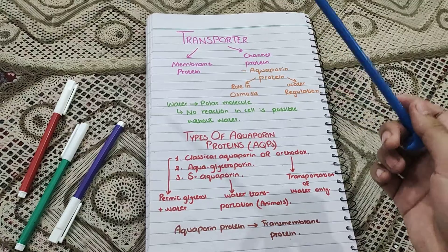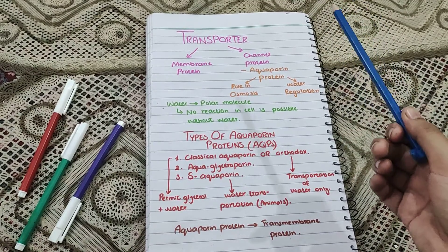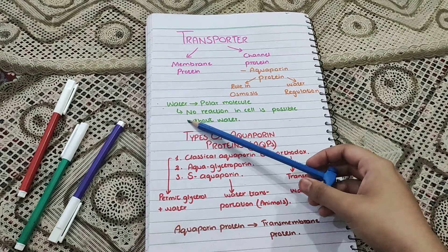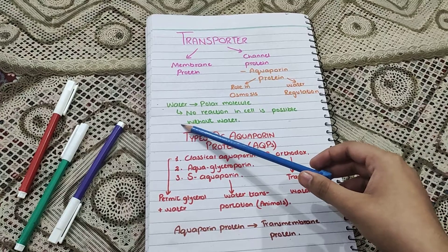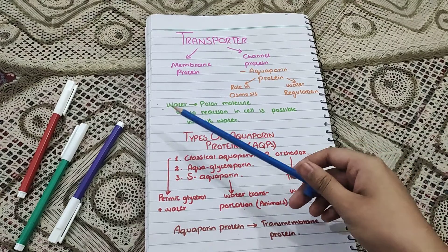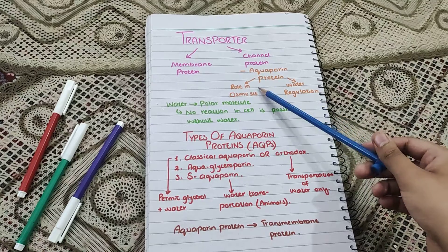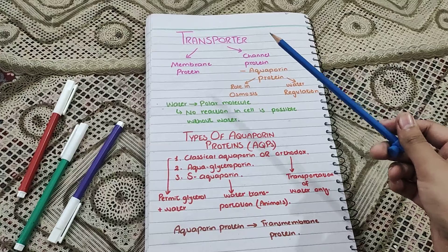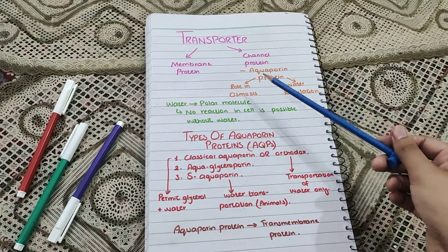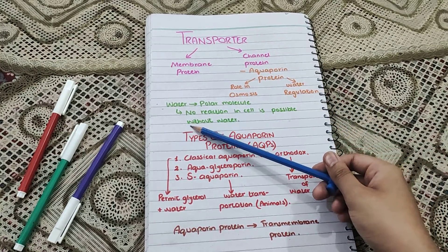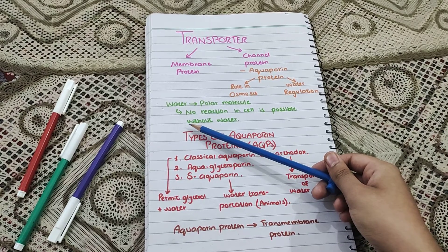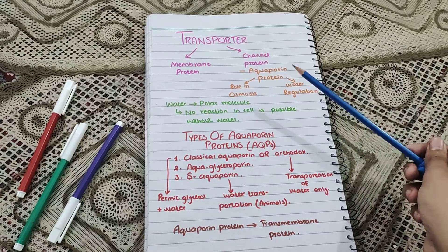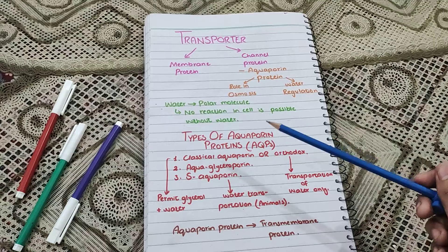Whenever the cell needs water, it facilitates a huge amount of water into the cell. Why does a cell need water? Water is actually a polar molecule, and that is why it must need a channel protein to transport water inside the cell. No reaction can occur in the cell without water.